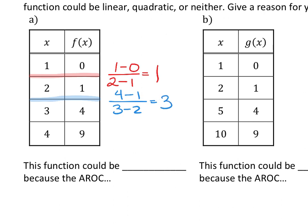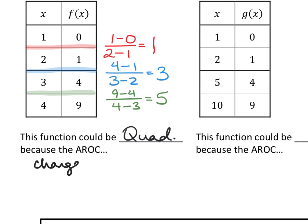For the next interval, we have 4 minus 3 over 9 minus 4. 9 minus 4 is 5, 4 minus 3 is 1, so that's equal to 5. What's happening with these slopes every time? They're increasing by 2. My slopes are increasing by a constant rate, which means this is probably quadratic — making a parabola — because the average rates of change change at a constant rate of plus 2.